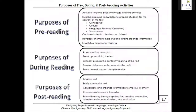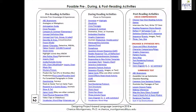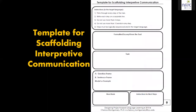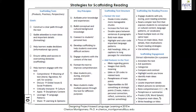There are also other things in the packet like information about pre-, during-, and post-reading activities in case you're not familiar with that, and a list of different types of activities for each phase. You'll notice that many of the items on the list are hot-linked — if you click on those links they will take you to templates or activity instructions. So if you're not really sure where to start or how to engage students with text besides giving them comprehension questions, this will give you lots of things to explore. There are also templates and strategy pages in the handout.